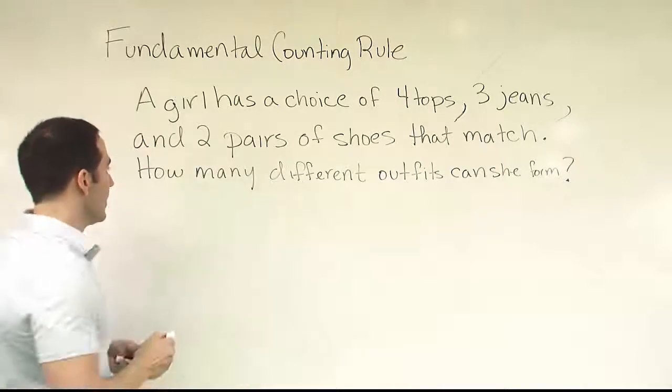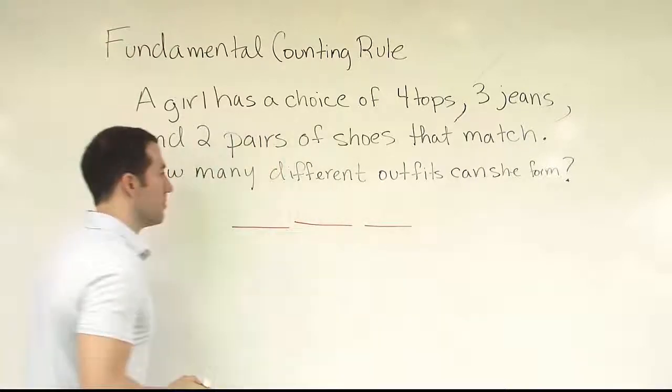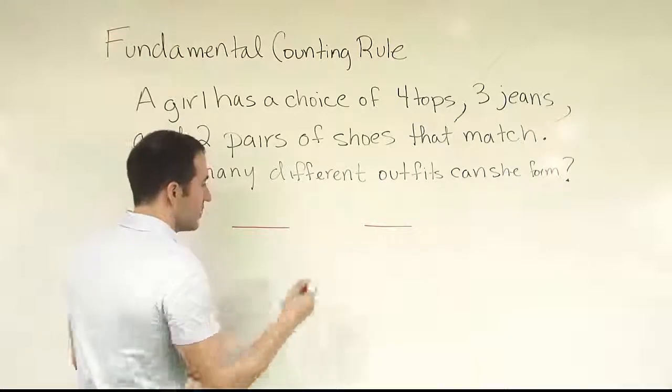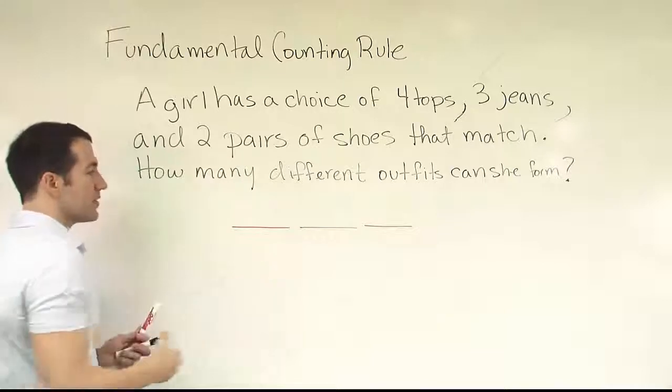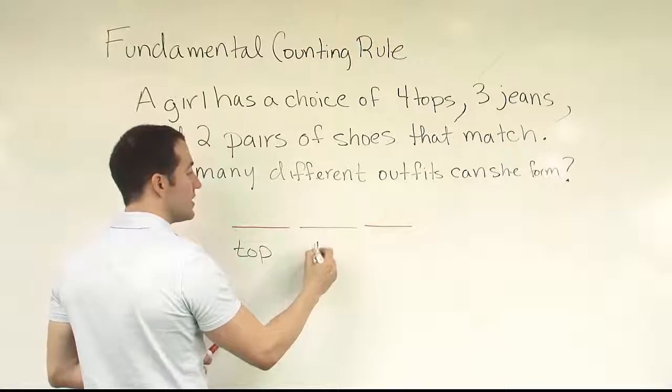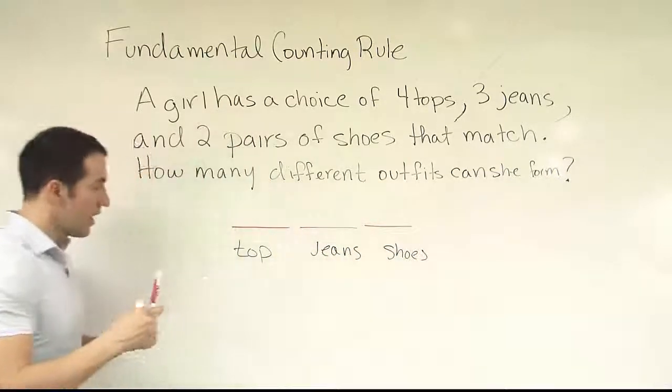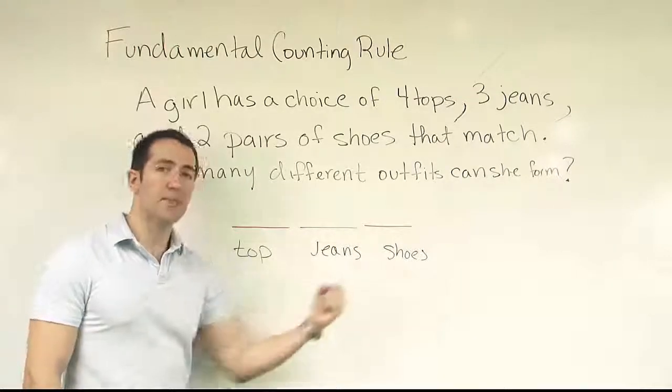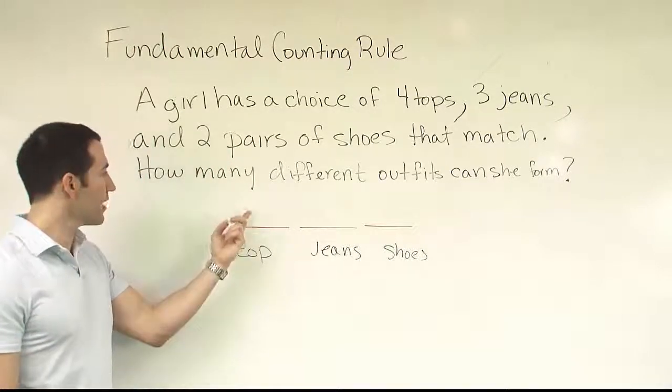So there's actually three things she has to do. So it's probably helpful if we say, let's draw three spaces to represent the three choices she has to make. So she's got to make three choices. Let's draw three spaces to show that. This first space is going to represent the choice of choosing a top. This one is going to represent the jeans she has to choose and then the shoes. And then what you want to do when you're working with the fundamental counting rule is after you've broken it up to a set of steps, you want to think about the number of ways she can complete each step, and you want to put that up here on top.